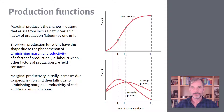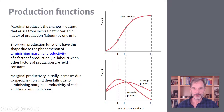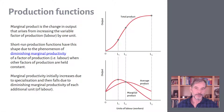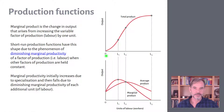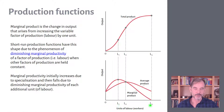This top graph is the total product graph, and on the bottom we have average and marginal products. On the vertical axis of both, I have output — the number of pallets produced. On the horizontal axis is one of the factors of production: labor. There could be many factors like raw materials, wood, electricity, and labor, but I'm just looking at labor here.